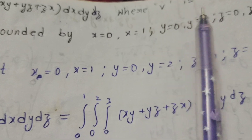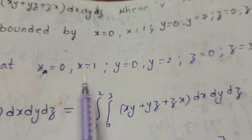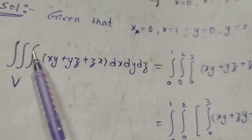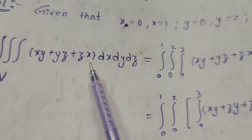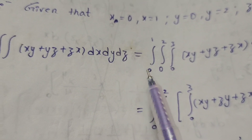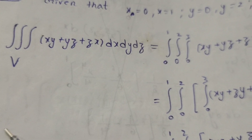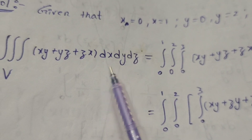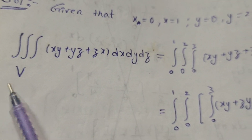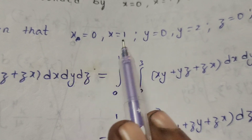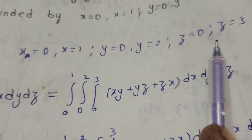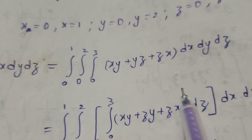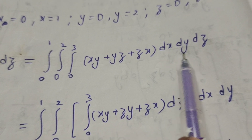Here V is the region bounded by x, y, z values. The triple integral over V of (xy + yz + zx) dx dy dz equals the iterated integral with x from 0 to 1, y from 0 to 2, and z from 0 to 3, of the function (xy + yz + zx) dx dy dz.